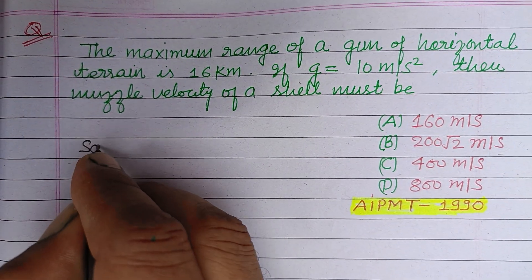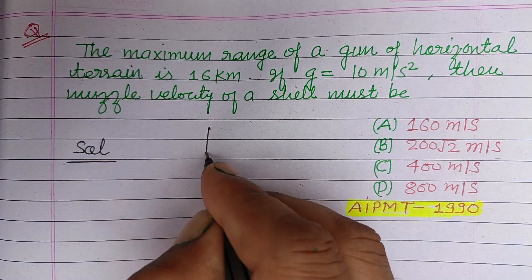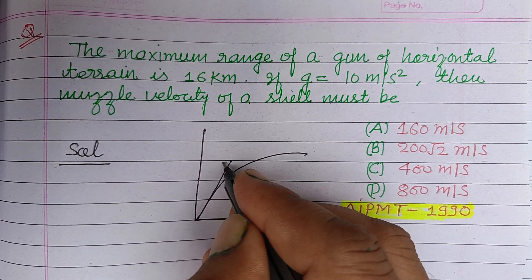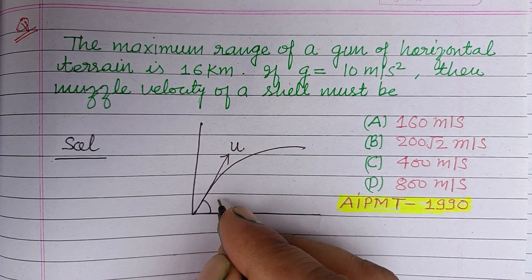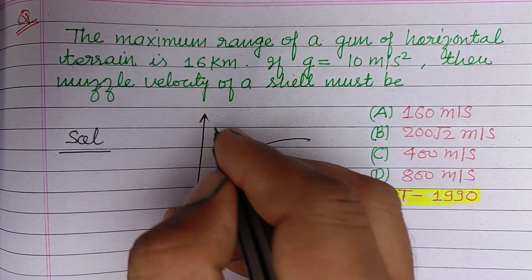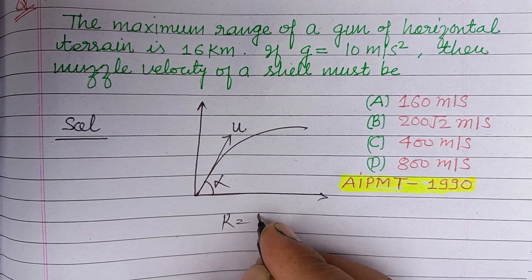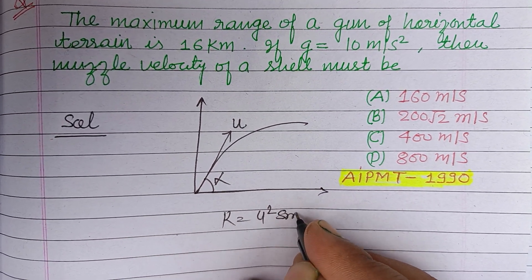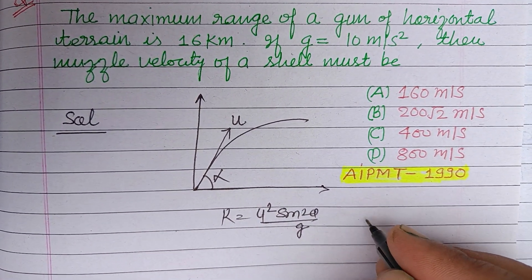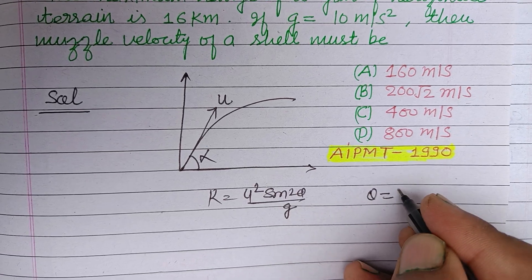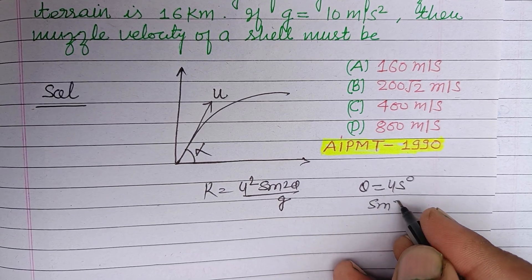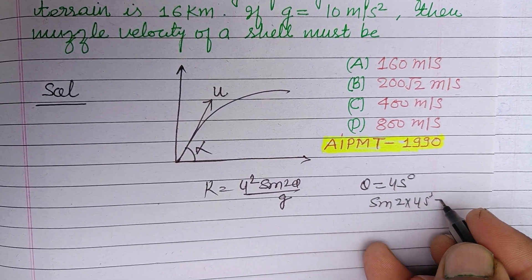Students, this is a question from projectile motion. When a particle is thrown at velocity u at an angle alpha, it covers a range R equal to u squared sine 2 theta over g. When R is maximum, theta equals 45 degrees, so sine 2 theta equals sine 90 degrees, which equals 1.